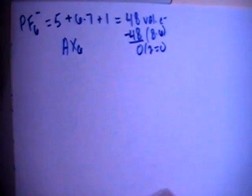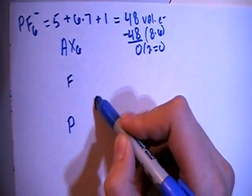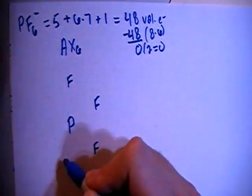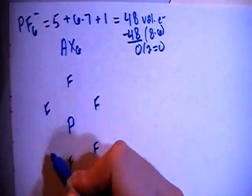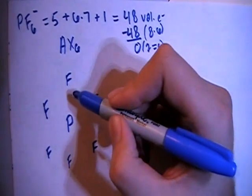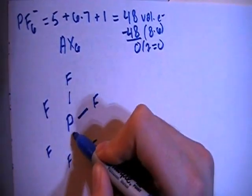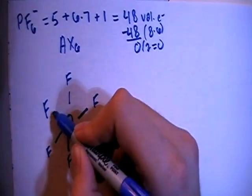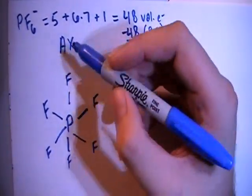So let's go ahead and draw this structure. We have the phosphorus in the center surrounded by the 6 fluorines. There are the 6 fluorines. And we can go ahead and single bond all of those to the phosphorus in the center.